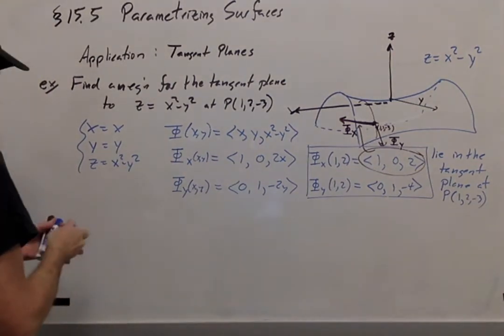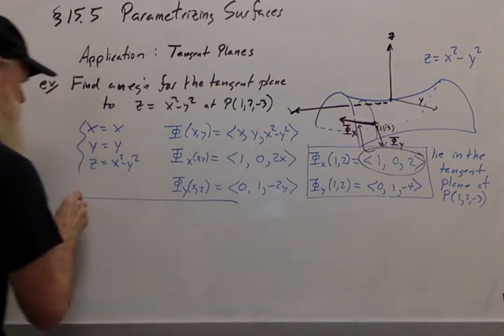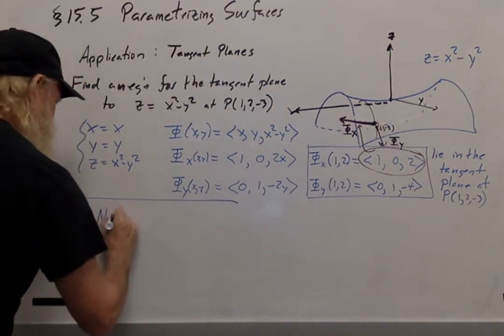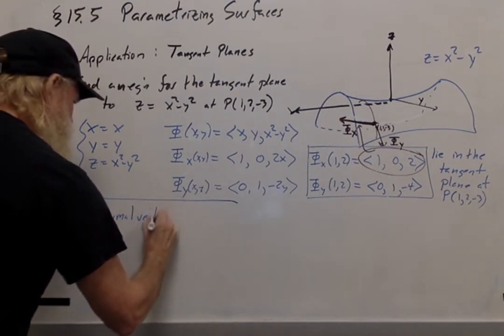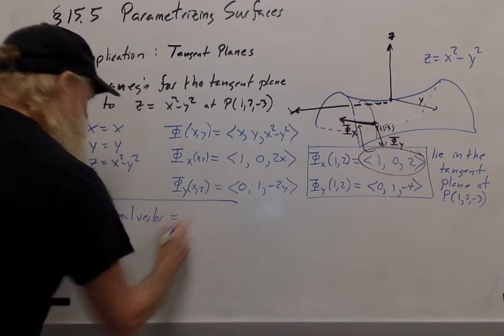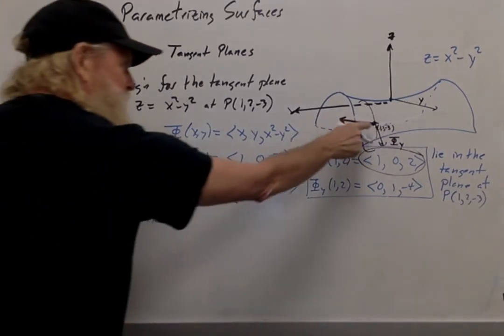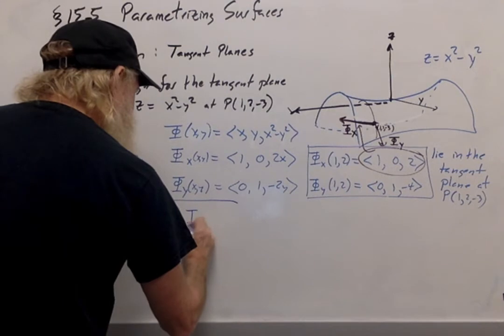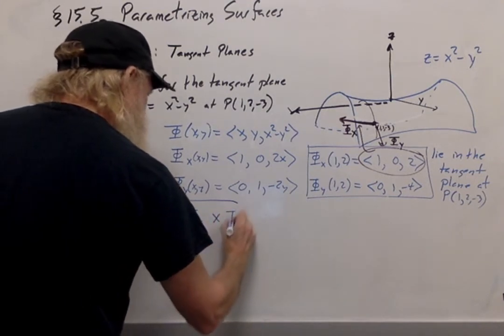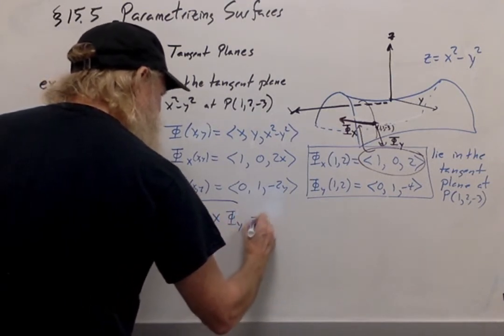So to get a normal vector, in other words, a vector which is perpendicular to the tangent plane at this point P, I'll take d phi dx and cross it with d phi dy.